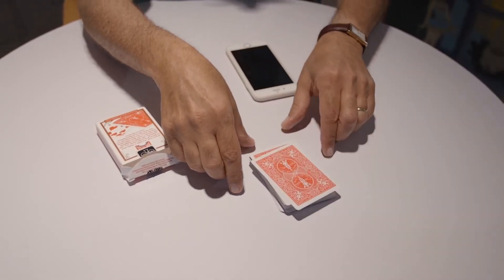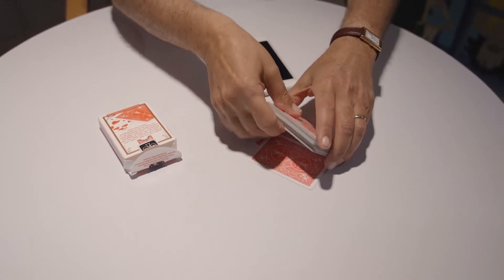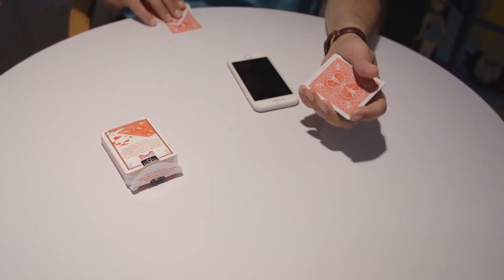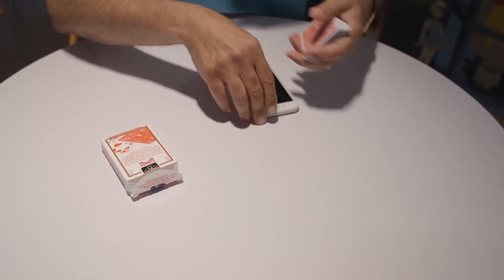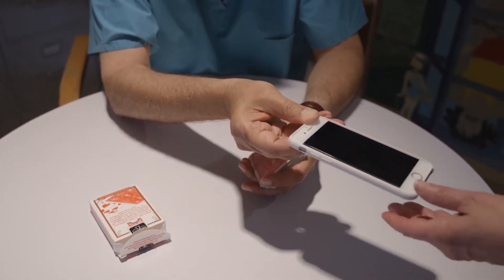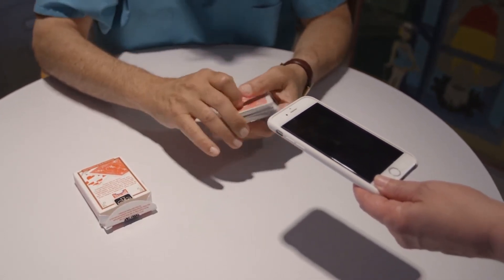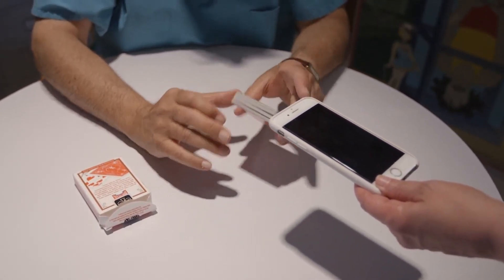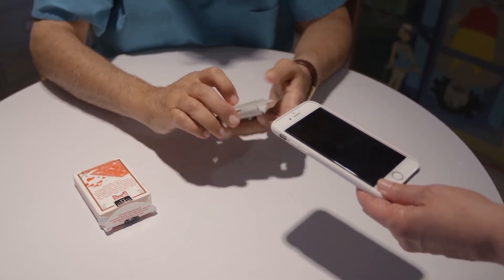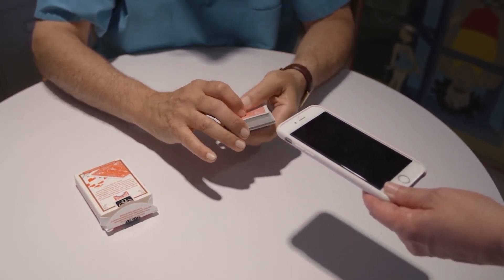Now comes the reveal. The iPhone is now held by the spectator with the light in this corner over here. You will now go through the cards until the light goes on. At that point the card will be revealed.